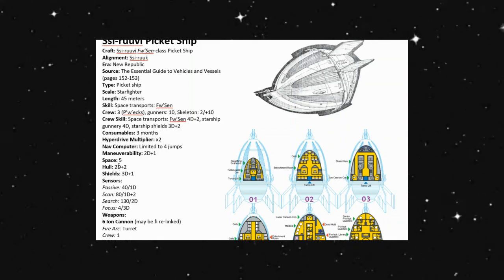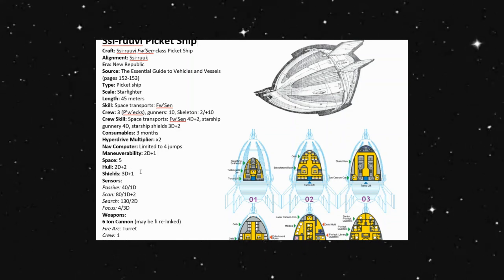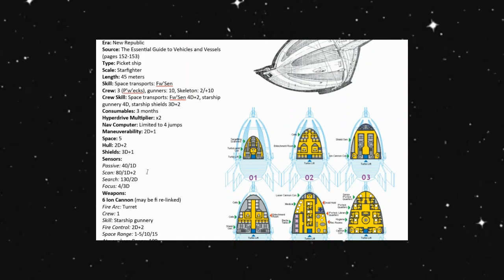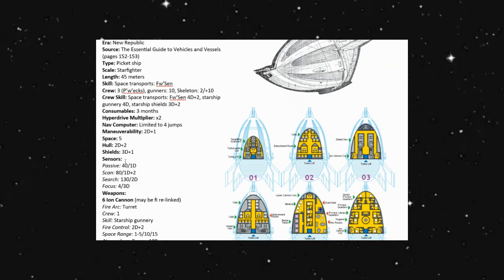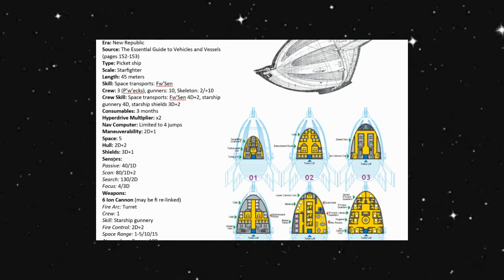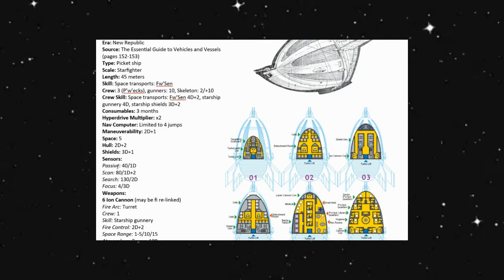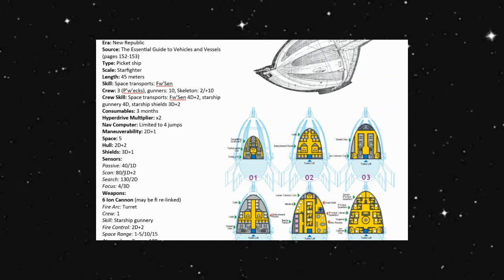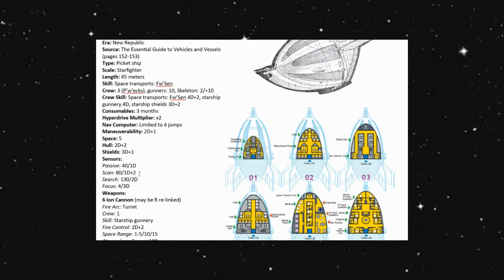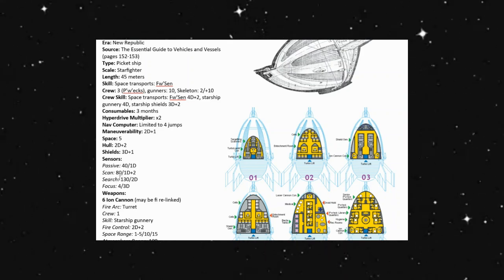We have a hull of 2D plus two, so a little bit above our average. Shields of 3D plus one, so that is actually pretty respectable shields all in all. Our sensor packet, we can passively scan up to four kilometers with a 1D. We can actively scan up to eight kilometers at 1D plus two. A search out to 13 kilometers with a plus 2D to our scanning. And a focus of 400 meters with a 3D.